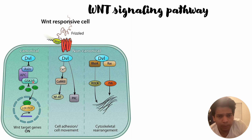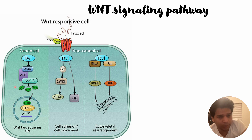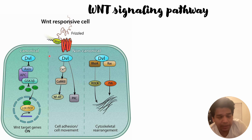The two categories are the canonical pathway and the non-canonical pathway. In the case of the canonical pathway, this WNT signaling pathway helps in tissue repair, embryogenesis, and other regular processes. When the WNT signaling pathway receptors get activated, based on phosphorylation,